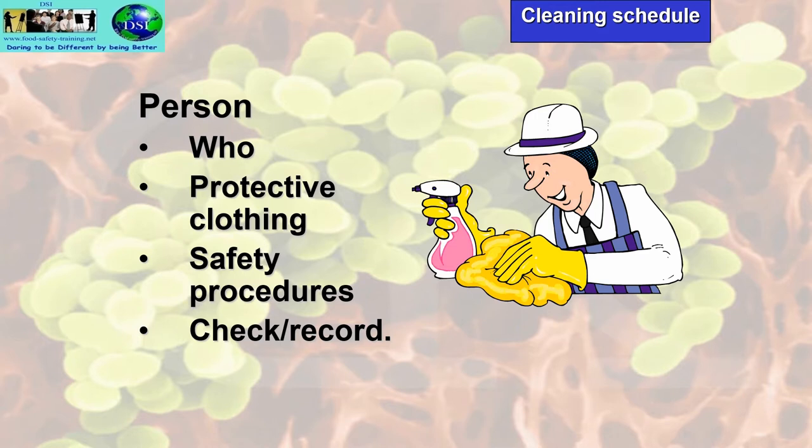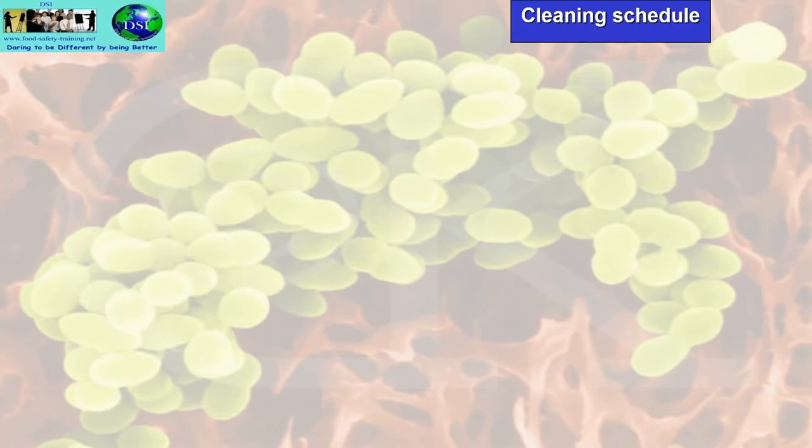The cleaning schedule is part of the HACCP — the Hazard Analysis Critical Control Points — in other words, a food safety management system. It's part of your due diligence defence if you're ever taken to court. Having a cleaning schedule and having it signed off shows that you've taken all reasonable and necessary precautions to clean.